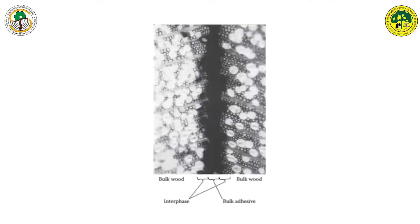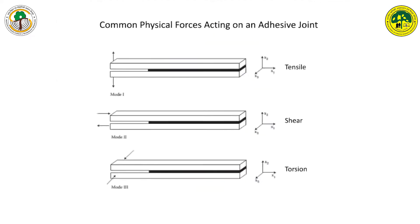In this picture you can see on both sides the bulk of wood, and at the center the bulk of adhesive, and the complicated interspace layer. Some of the common physical forces acting on an adhesive joint are tensile, shear, and torsion, and most of these physical factors decide the adhesive joint performance.